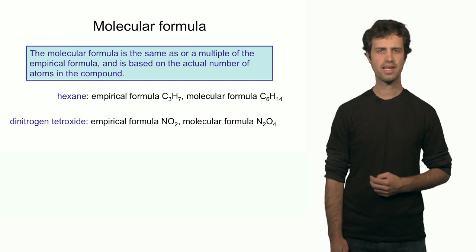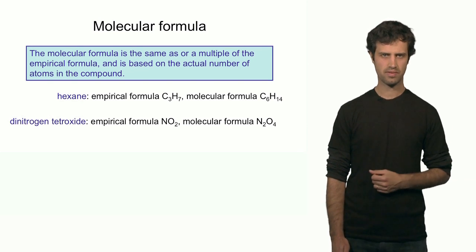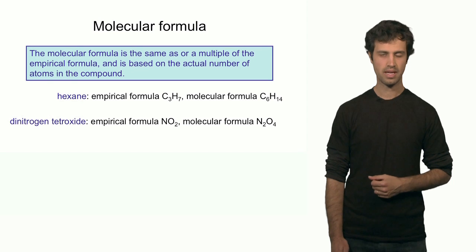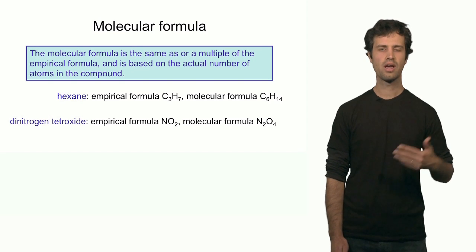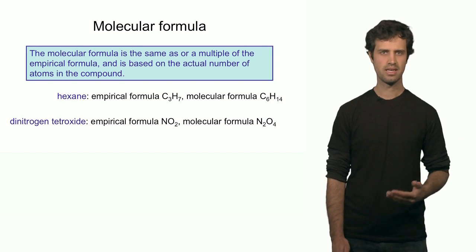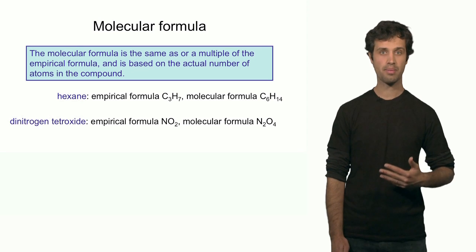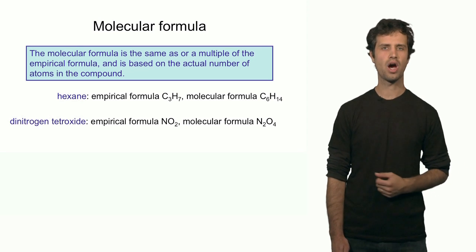How do you find that number? That number must come from extra pieces of information — information like concentration or density, experimental information on top of what you already know.